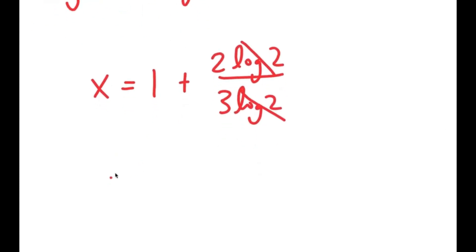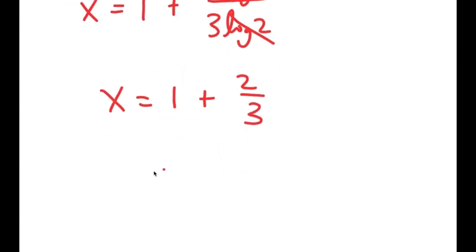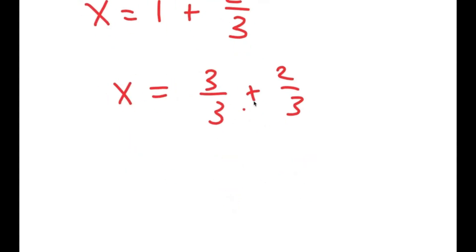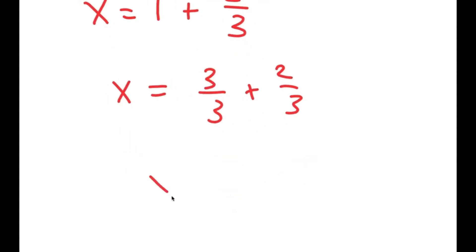These two log 2 terms cancel out. So I get x is equal to 1 plus 2 over 3, which is equal to 3 over 3 plus 2 over 3, which is 5 over 3. So x is 5 over 3.